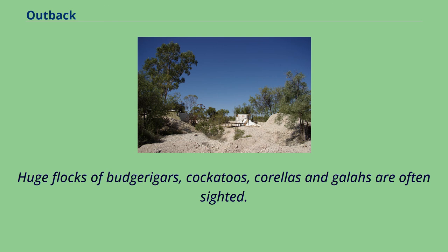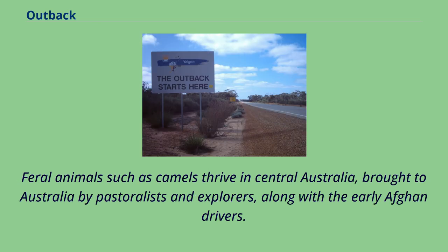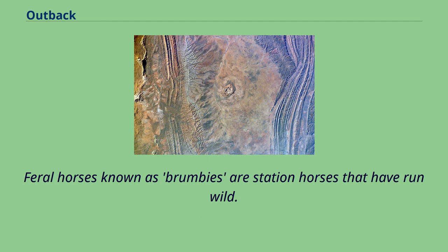Huge flocks of budgerigars, cockatoos, corellas and galahs are often sighted. On bare ground or roads during the winter, various species of snakes and lizards bask in the sun, but they are rarely seen during the summer months. Feral animals such as camels thrive in central Australia, brought to Australia by pastoralists and explorers along with the early Afghan drivers. Feral horses known as brumbies are station horses that have run wild.